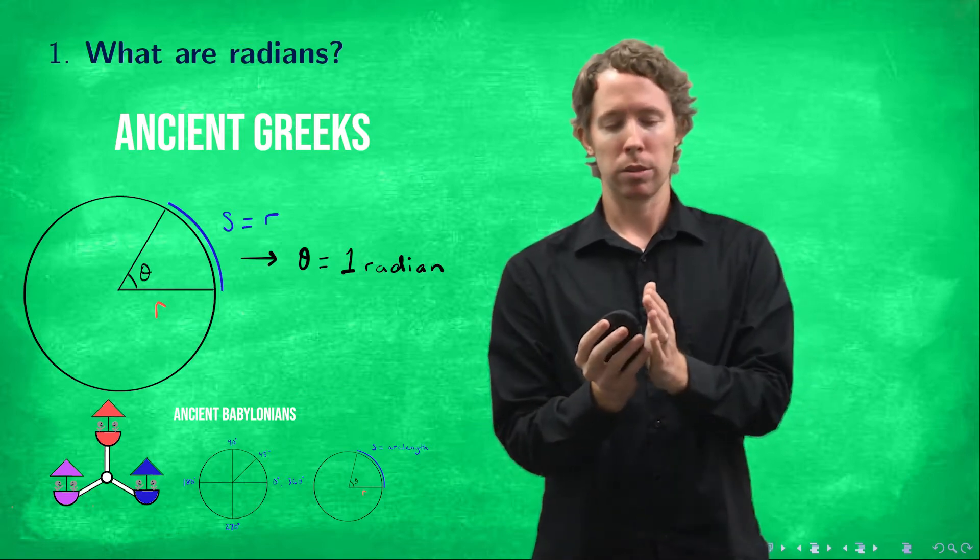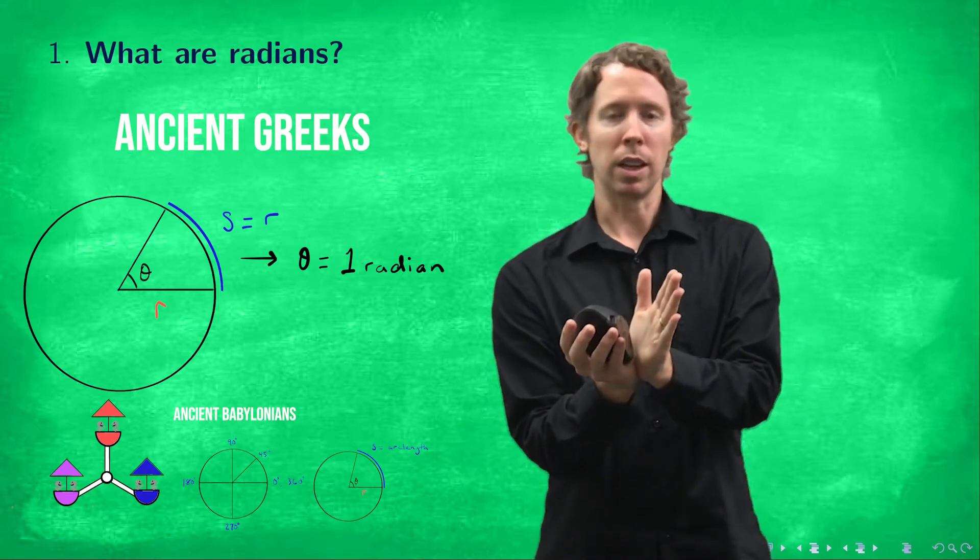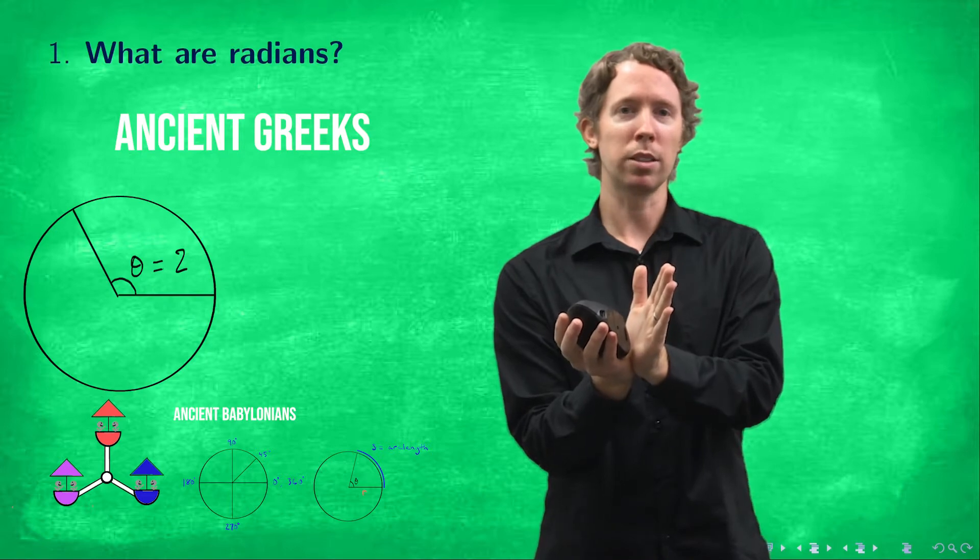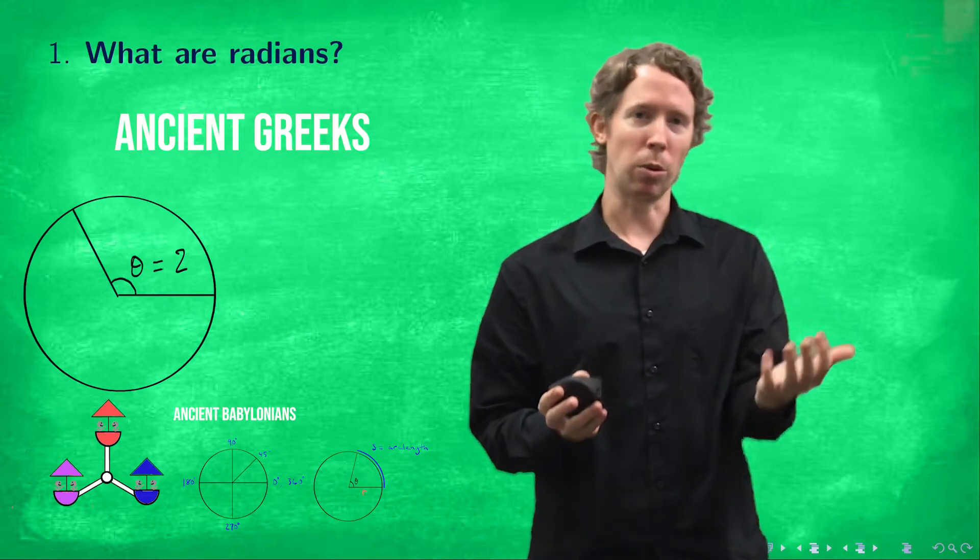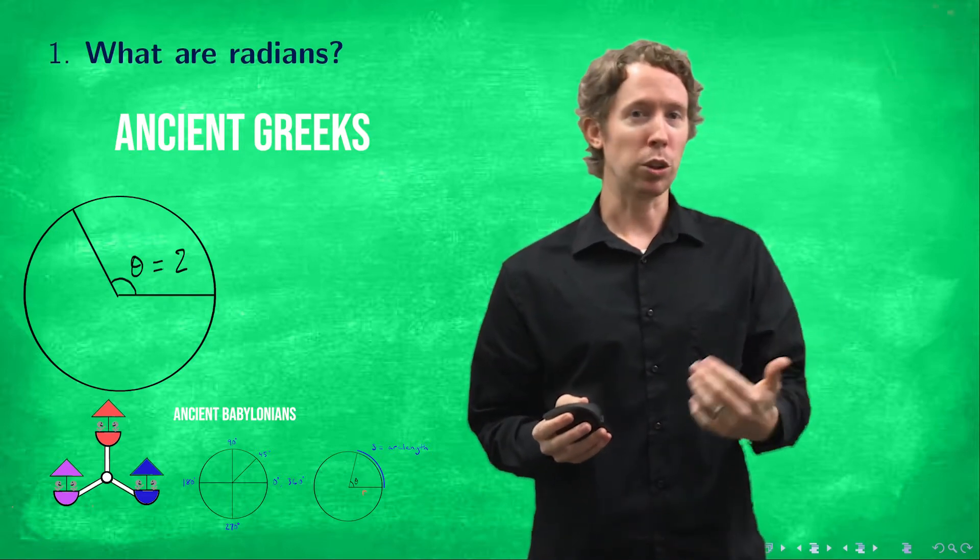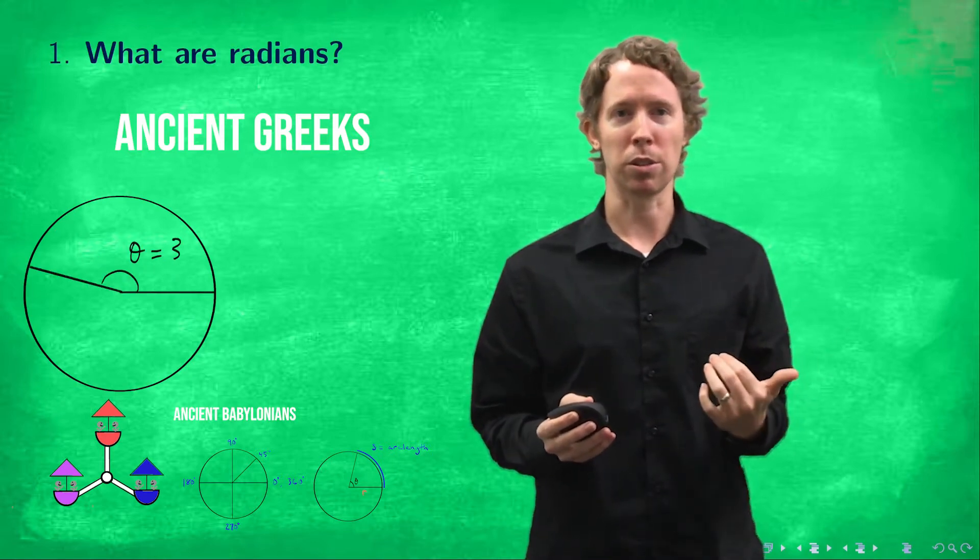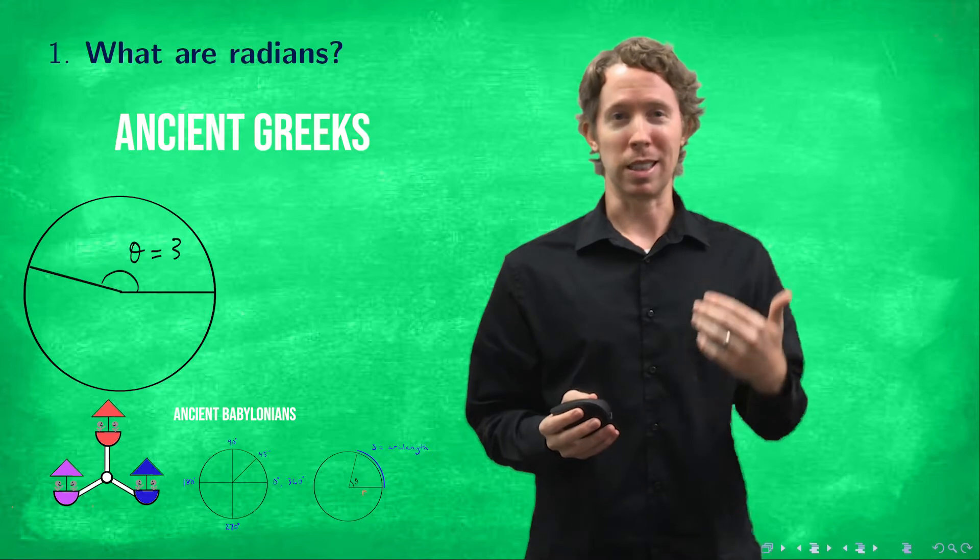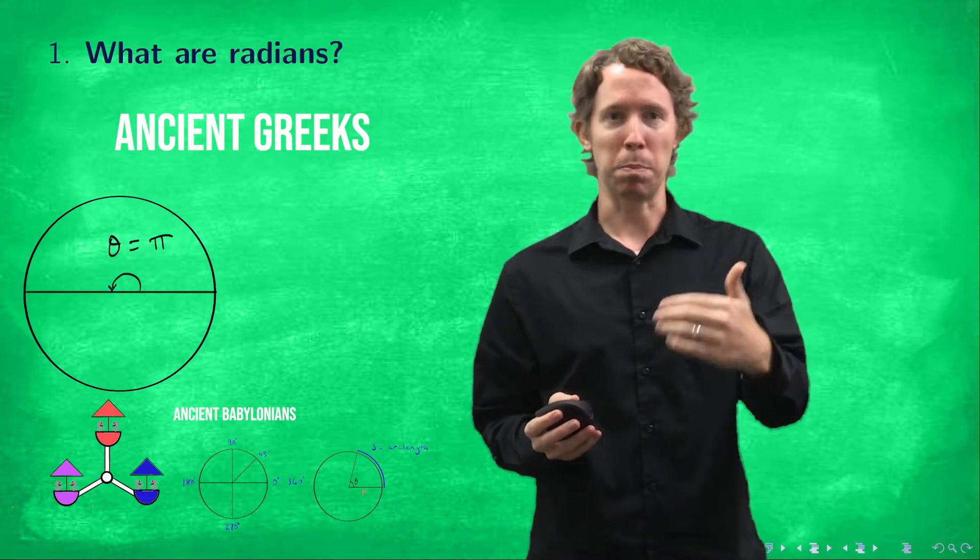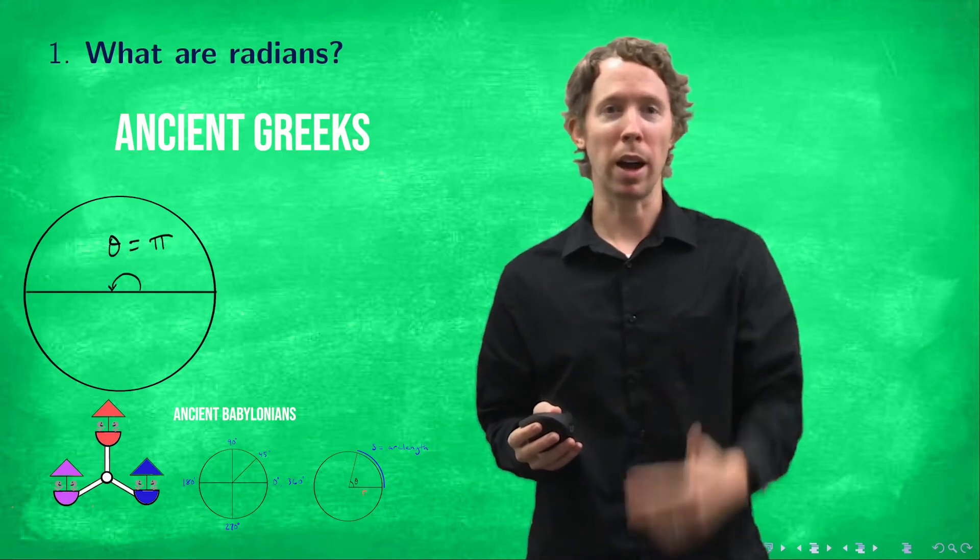The angle that cuts out a distance of two times the radius they call two radians and so on. So you need a little more than three radians to get halfway around the circle. In fact the exact number that you need is pi and that's where the number pi comes from.